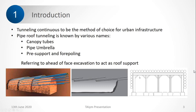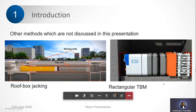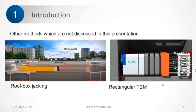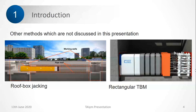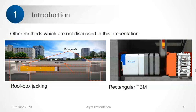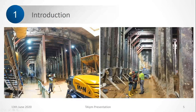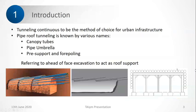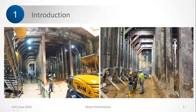There are other methods to excavate underpasses in shallow overburden, such as roof box jacking or rectangular TBM, but I'm not discussing them in this paper. The type of structure I am going to discuss is one which is excavated as a tunnel below very shallow overburden, pre-supported using pipes at the top, sides, and sometimes also at the bottom. Before excavation, all these pipes are installed, and then as excavation progresses, frames are installed. These are the frames installed as excavation progresses — this is the kind of structure I will present today.